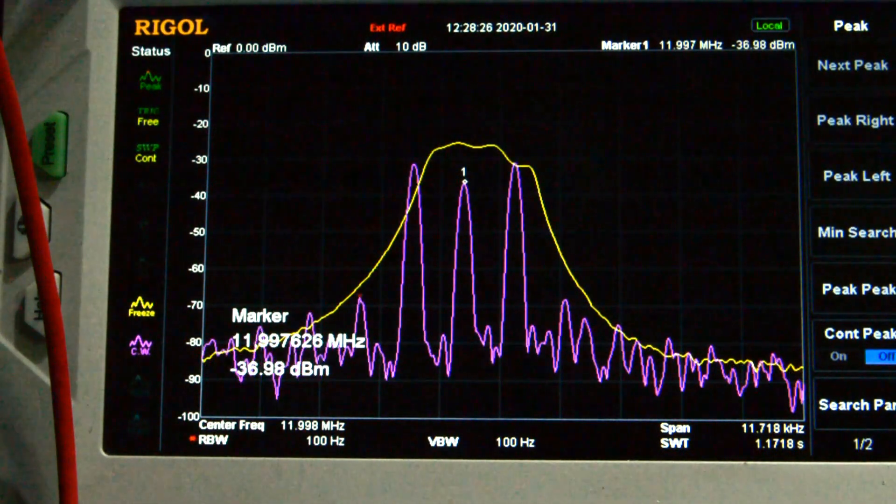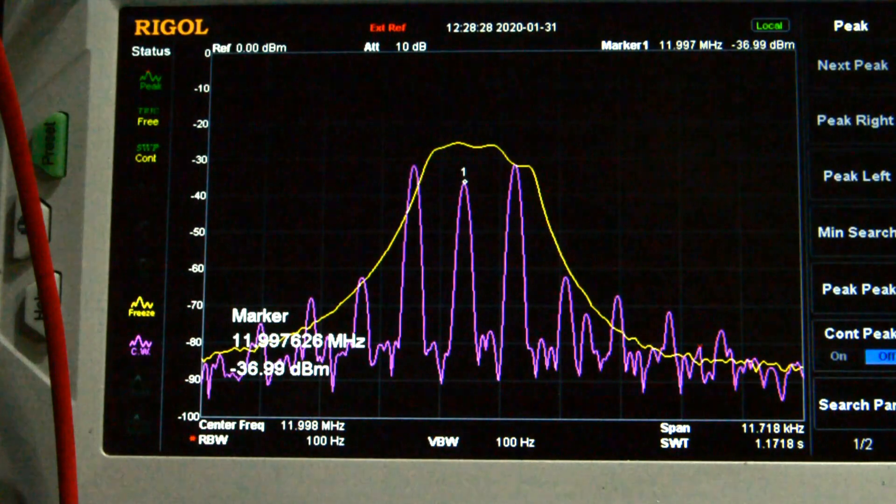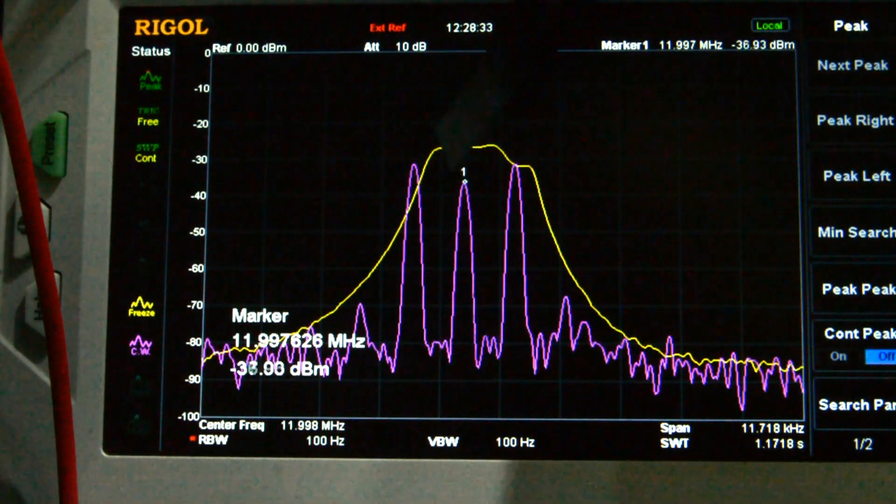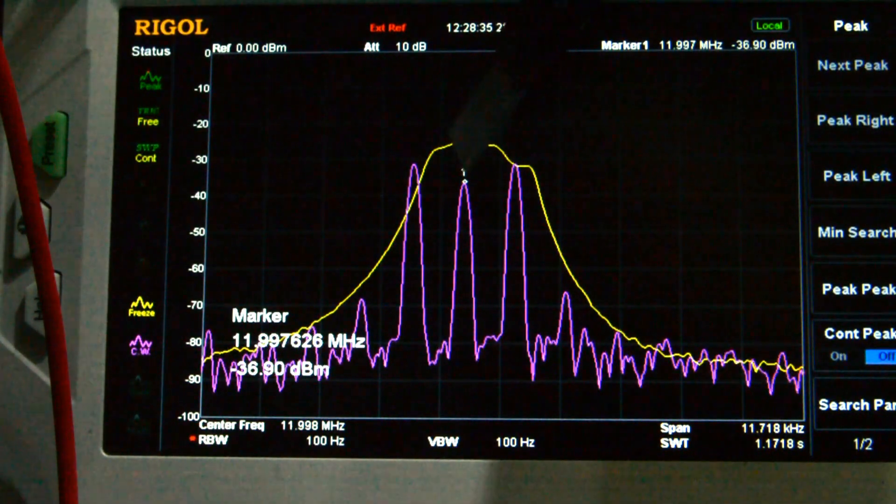Now there's some quite interesting things going on here. The purple trace you can see on the spectrum analyzer, the peak in the center, this is our BFO frequency so this is effectively our carrier.